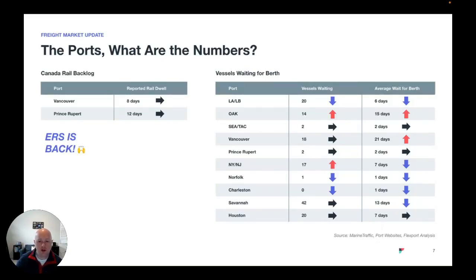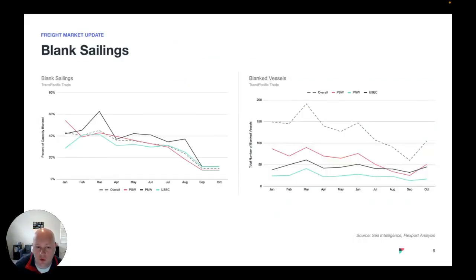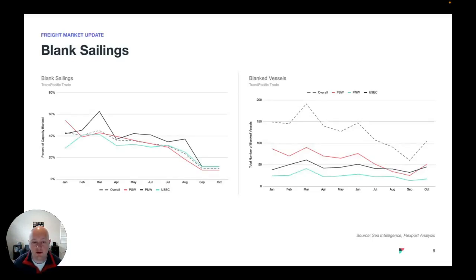One more thing before we move on to trucking: what we're seeing in terms of blank sailings. With the decrease in import volume, we're seeing carriers respond by blanking sailings. On the left side, you see the percentage of blank sailings as a percentage of capacity. We're down to about 25 percent capacity moving on the Trans-Pacific trade. Why are they doing that? It's a signal that the carriers do not believe that a peak season is coming. So they're removing capacity to sail more efficiently, sail with more full vessels, trying to keep their loadings above about 80 percent — right now they're at about 81 percent on the Trans-Pacific trade — and therefore kind of supporting rate levels.